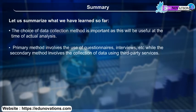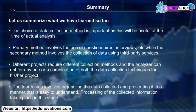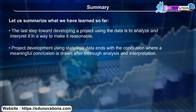Primary methods involve the use of questionnaires, interviews, etc., while secondary methods involve the collection of data using third-party services. Different projects require different collection methods, and the analyzer can opt for one or a combination of both. The fourth step involves organizing the data and presenting it in a manner that is easy to understand. Finally, the last step is to analyze and interpret the data to make it reasonable. Project development using statistical data ends with a conclusion, where a meaningful conclusion is drawn after thorough analysis and interpretation.